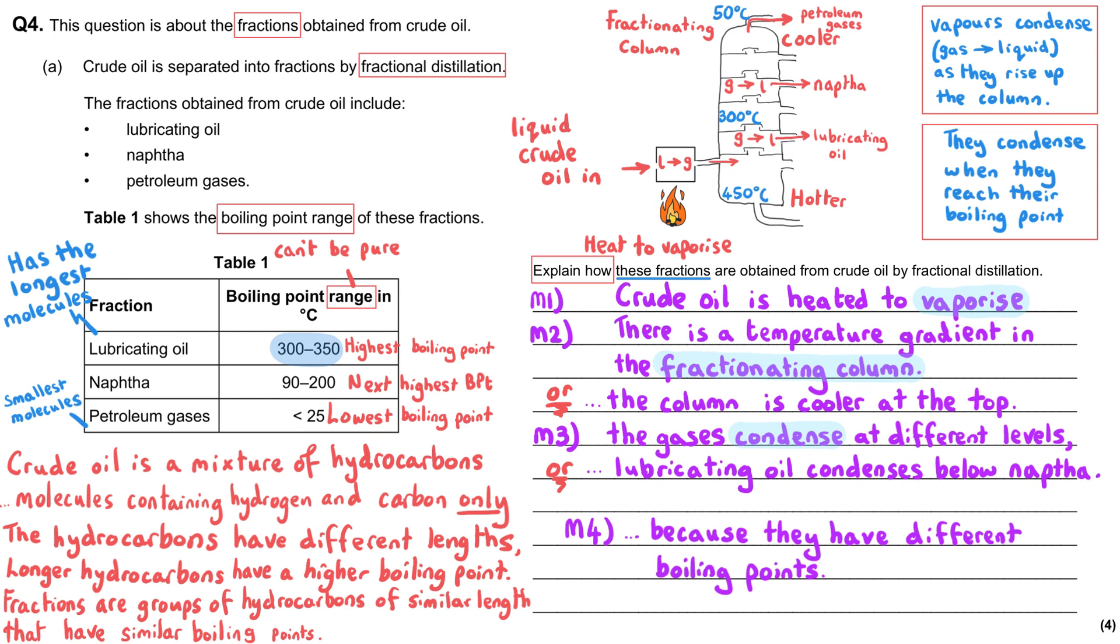And then you need to talk about the gases condensing. And you need to use the phrase different boiling points. If you want, you could support your answer with a diagram. That would mean that you would need to write less description because your diagram would cover some of the same details.